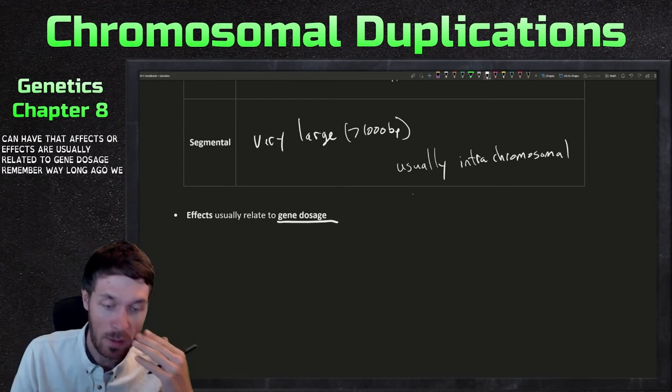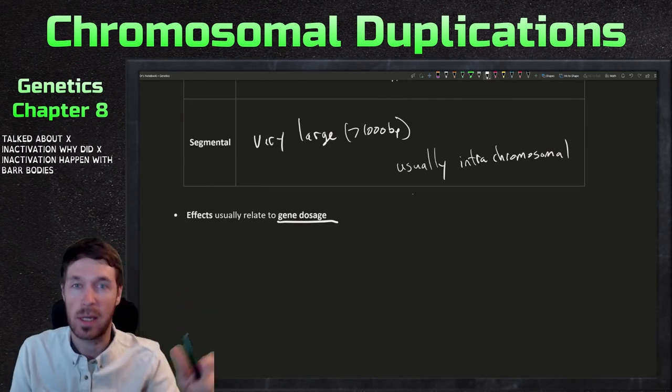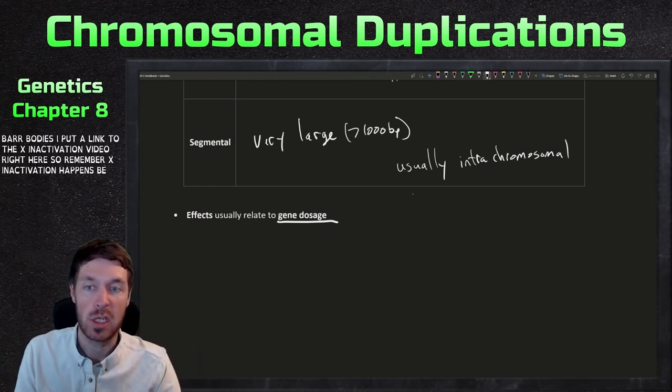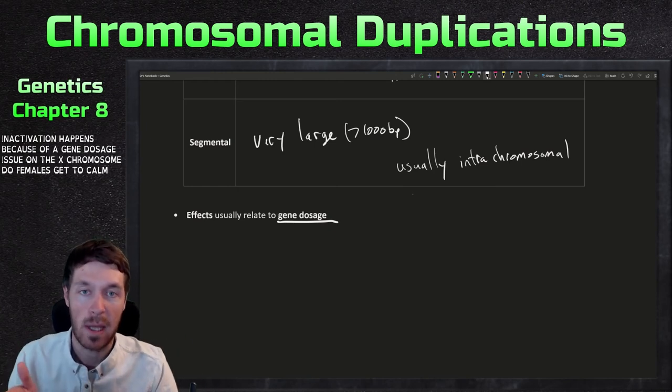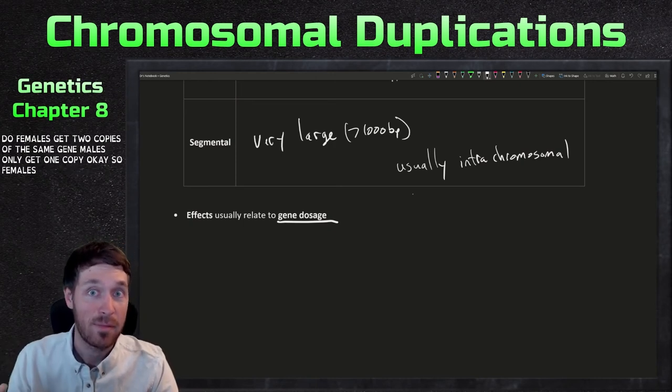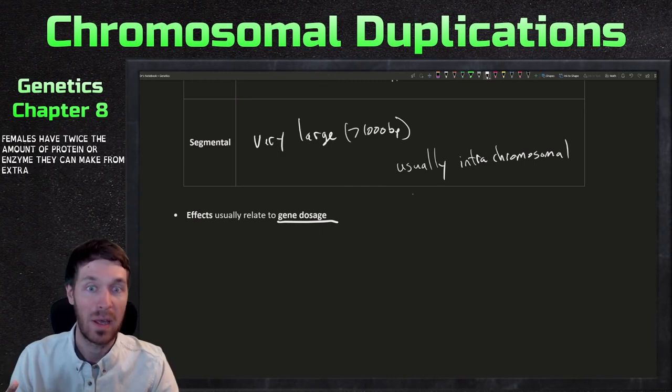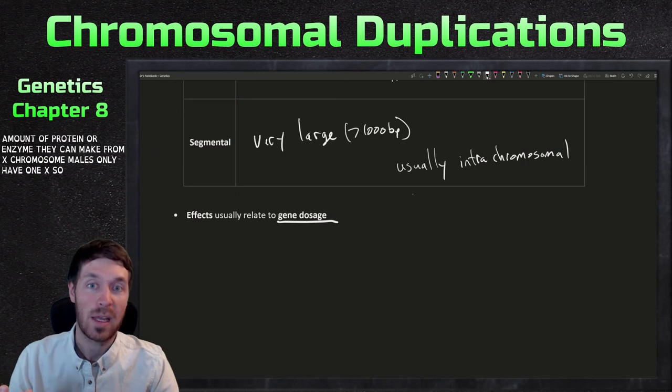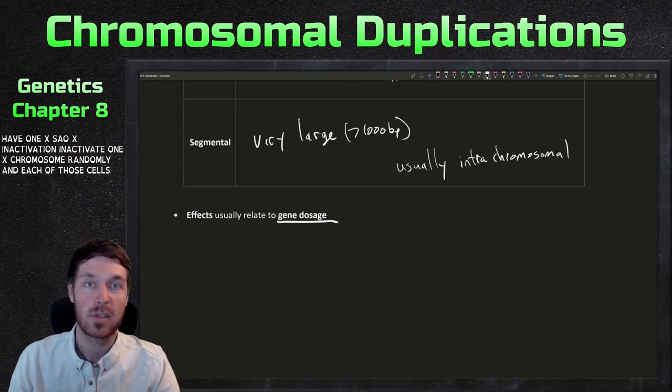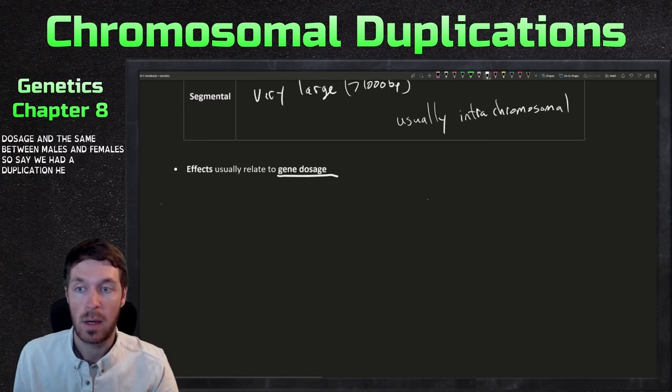Sometimes it can have bad effects. So effects are usually related to gene dosage. Remember way long ago, we talked about X inactivation. Why did X inactivation happen with Barr bodies? I'll put a link to the X inactivation video right here. So remember, X inactivation happens because of a gene dosage issue on the X chromosome. Females get two copies of the same gene. Males only get one copy. So females have twice the amount of protein or enzyme they can make from X chromosome. Males only have one. So X inactivation inactivates one X chromosome randomly in each of those cells. That makes the gene dosage the same between males and females.